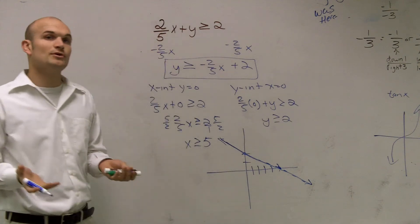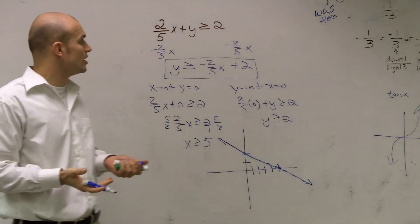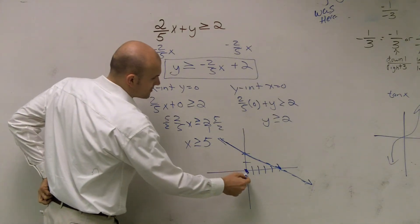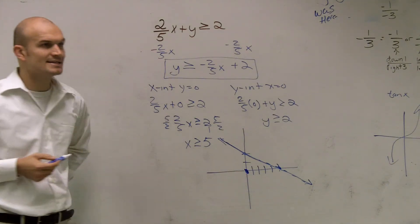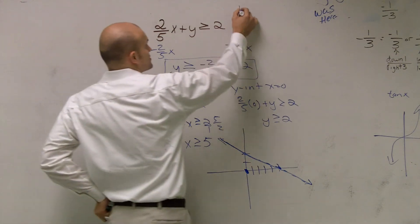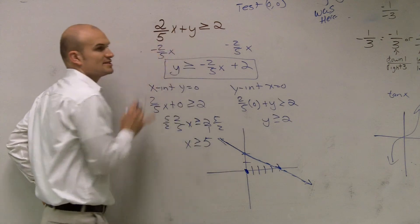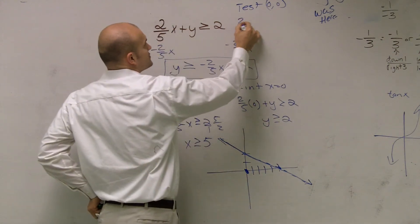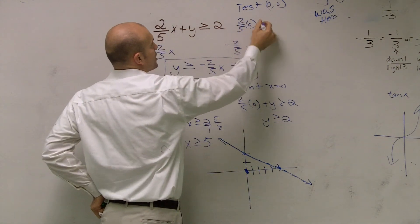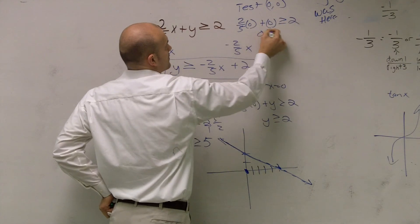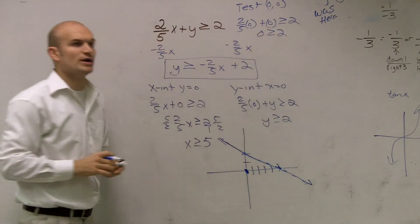And then simply what I'm going to do is I'm just going to plug in 0, 0, and determine is that going to make my equation true or false? So I'm going to plug in 0, 0 right here. And if I was going to use a test point for 0, 0, I'd say test 0, 0. And if you plug 0 in for x and y, you have 2 fifths times 0 plus 0 is greater than or equal to 2.